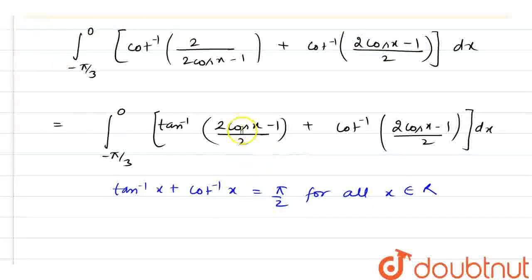Now, same here. In place of x, we have 2 cos x minus 1 by 2 and 2 cos x minus 1 divided by 2. So, I can say this value is equals to pi by 2.